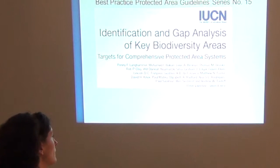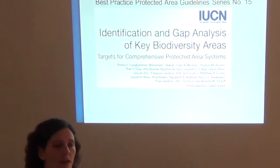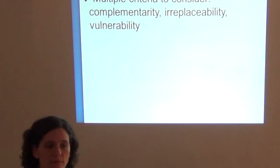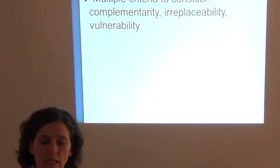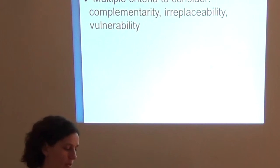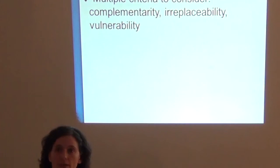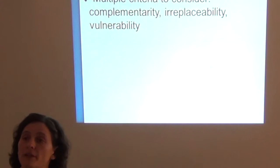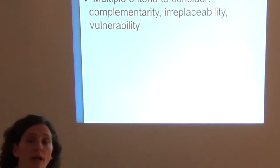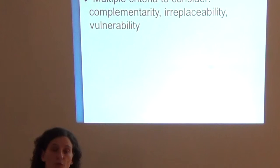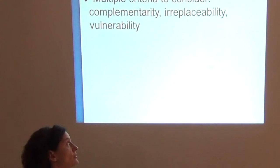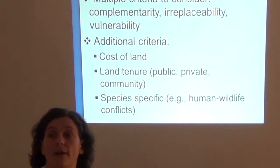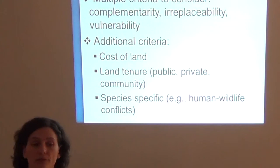It has a lot of information that I think you'll find useful. So as we've seen, in order to identify those areas that will best meet our conservation goals, we need to consider several criteria: complementarity, irreplaceability, and vulnerability of those areas in relation to our conservation goals. But there are additional criteria that we must and definitely have to take into account.